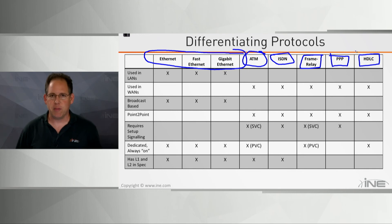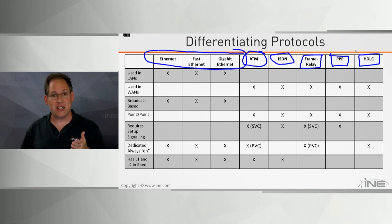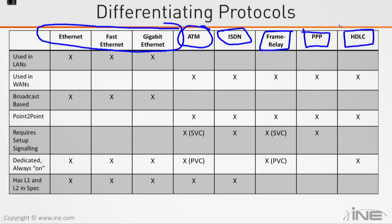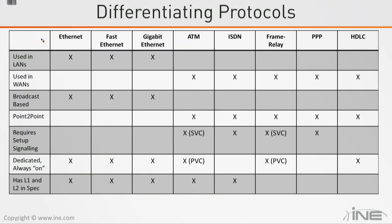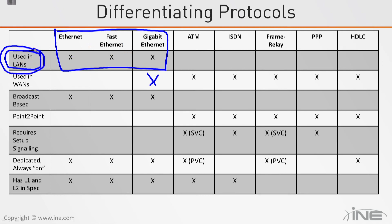All these protocols answer the questions: how do I know when it's my turn, when something comes in off the wire how do I know if it's for me, and when putting something on the wire do I need to address it to the destination? Some of these protocols are used in local area networks — specifically designed for devices in close proximity. That would be Ethernet, Fast Ethernet, and Gigabit Ethernet.